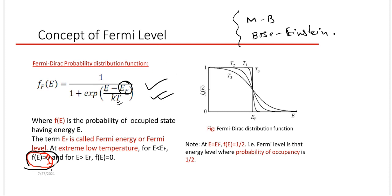In this equation, if we put E equal to Ef, clearly F will be equal to 0.5. So we can define this characteristic energy Ef as the Fermi energy — it is the energy level where the probability of occupancy is exactly 0.5. At E equal to Ef the probability becomes half, and the distribution graph shows this behavior.